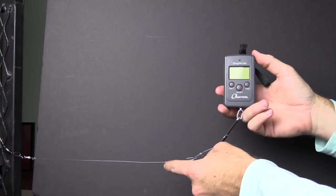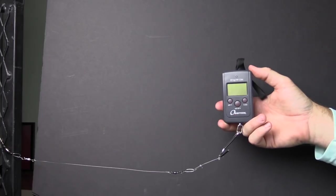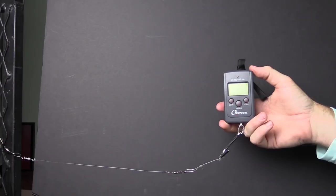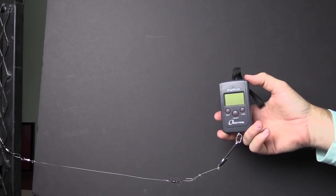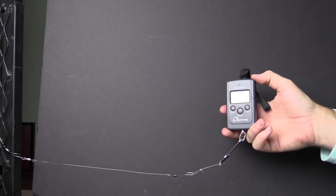We're going to do it with three different lines. This first one is fluorocarbon, then we're going to do traditional monofilament, and then finally we're going to do braid to see which knot is stronger for each line, because different knots react to different lines in different ways.